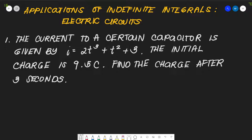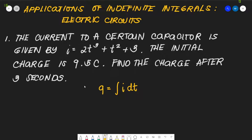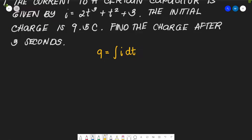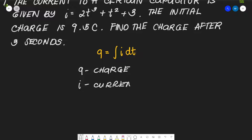Since we are looking for the charge, the equation we will use is q = ∫i dt. Here, q is the charge and i is current.